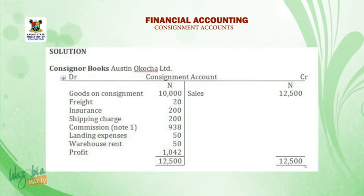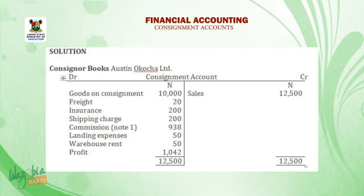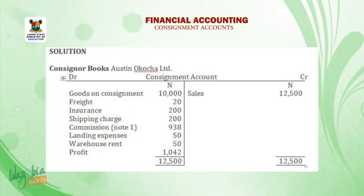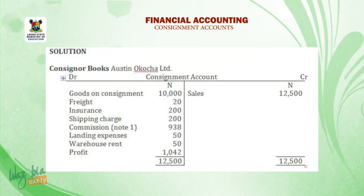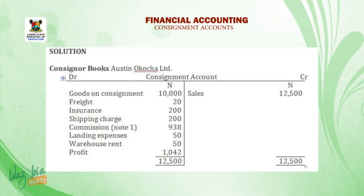Solution — consignment books of Austin Okocha Limited. The consignment account: on the debit side — goods on consignment 10,000 Naira; freight 20 Naira; insurance 200 Naira; shipping charges 200 Naira; commission (Note 1) 938 Naira; landing charges 50 Naira; warehouse rent 50 Naira; profit 1,042 Naira. On the credit side — sales 12,500 Naira. The profit is ascertained by subtracting the total debit side values from the amount of sales to arrive at a profit of 1,042 Naira.